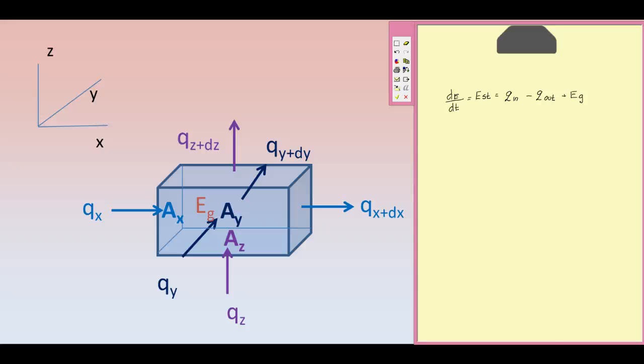For the energy balance, we again consider thermal energy as the only energy transfer. Heat conducted into the volume has now three components: Qx, Qy, and Qz.